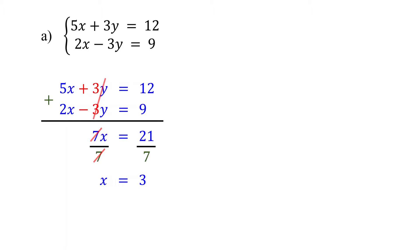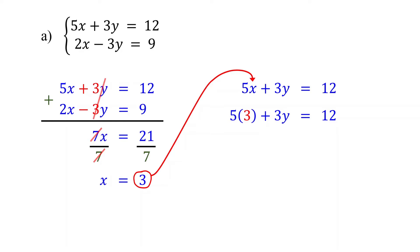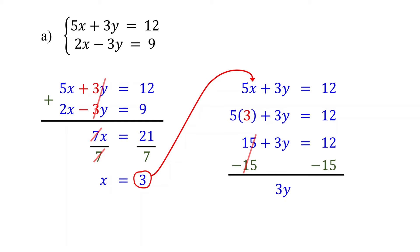Now that we have the value of x, the next step is to find the value of y. We can do this by substituting x with 3 into one of the original equations. Let's substitute it into the first equation. 5 times 3 is 15. Then subtract 15 from both sides of the equation. These cancel out, and 12 minus 15 equals negative 3. Then divide both sides by 3 to isolate y, and you get y equals negative 1.